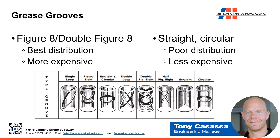So grease grooves. Here's a snip from the Reliable Bronze catalog with lots of different types of grease grooves, most of which we don't use. The figure eight — which, if you looked inside it, looks like a figure eight — or the double figure eight, like the one in the middle, provides the best distribution. The reason it's not always used is it is a bit more expensive to machine, a little trickier in terms of machining programming. The straight and circular grooves, like the examples on the far right, are pretty basic — just milling a slot or turning a circular groove. They're quick and cheap to make, but they don't distribute the grease as well.